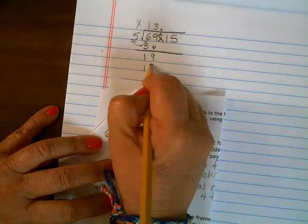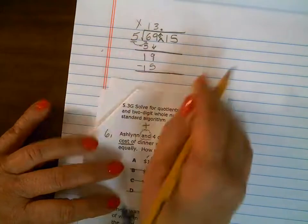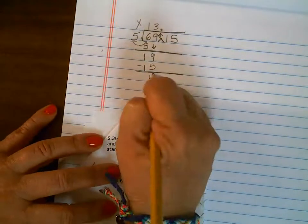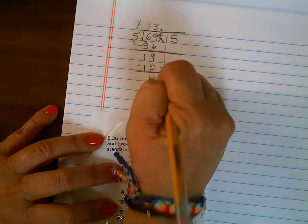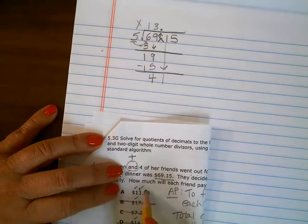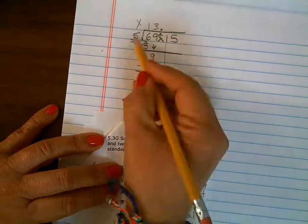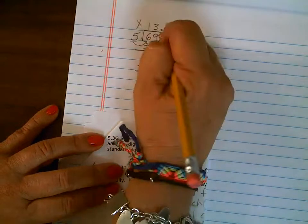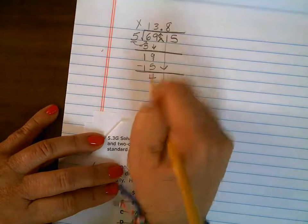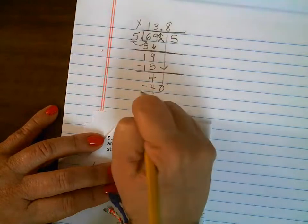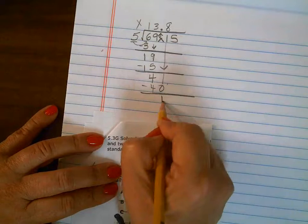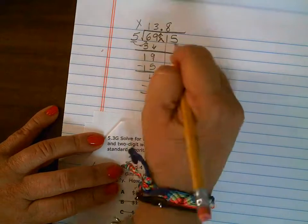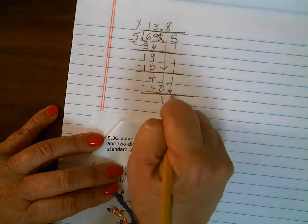And five times three is 15 - subtract that out and it's four. Checking: four is less than five. So now I can bring this down. Now let's look at this. Five can go into 41 eight times. Eight times five is 40. Subtract that out. Bring down my one. Check: it is one less than five? Yes it is. Bring this down.